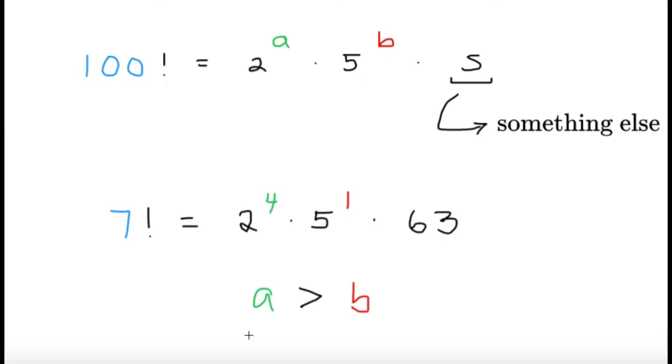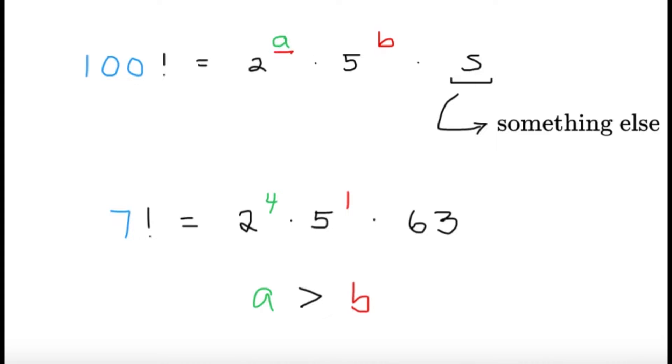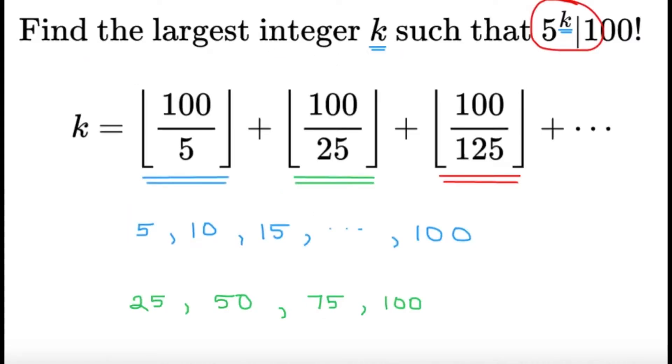So, we're now interested because, well, for a 10 raised to something to exist, it must have the 2 raised to something and the 5 raised to something. But if a here will be greater than b, then we're just technically interested in finding what's the largest integer k such that 5 raised to k is going to divide 100 factorial. And that's where the Legendre's formula is going to come in. We only want the 5 raised to k because we know that the exponent of 2 is going to be greater than the exponent of 5 anyway.